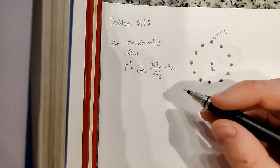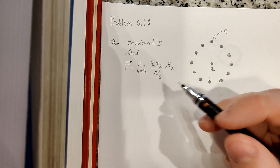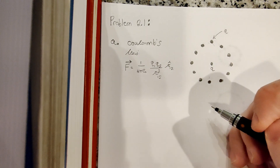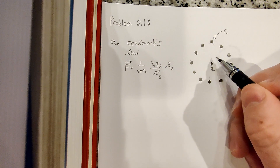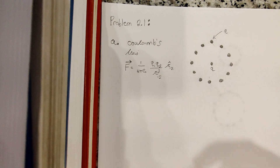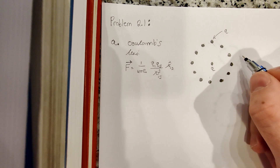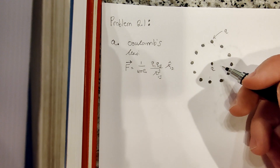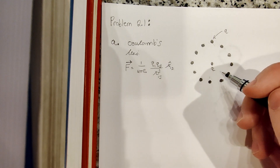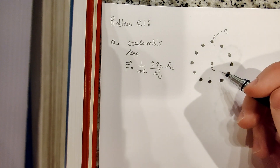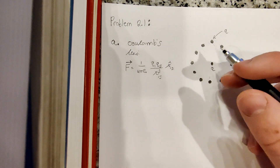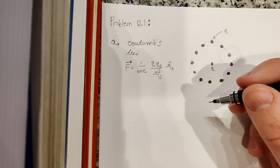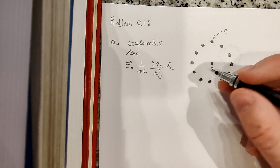We're skipping Chapter 1 for now because it's mainly just a bunch of vector math, and I'm assuming that if you're going through this course you should know most of that. It's a good review to go back and reference, and I'll definitely reference some equations from that chapter. We're going to start with Problem 2.1. If you have the fourth edition of David Griffith's, this problem is on page 60 at the bottom of the page.